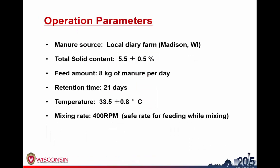Here's a summary of the other operating parameters. The manure is collected locally from a farm in Madison, Wisconsin. Total solids were adjusted to 5 to 5.5%. The feeding amount is 8 kilograms and retention time is 21 days. The temperature is running at 33°C, as mentioned in the previous presentation. The mixing rate is 400 rpm — this is the safe rate for our operation to prevent manure from spilling out and to avoid vortex formation.